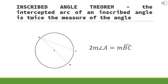The first theorem we'll discuss is the inscribed angle theorem. The intercepted arc of an inscribed angle is twice the measure of the angle. In the figure below, twice the measure of angle A is equal to the measure of arc BAC.